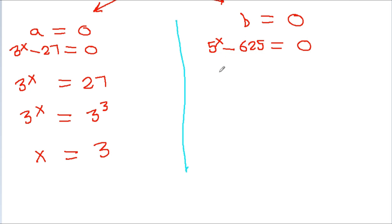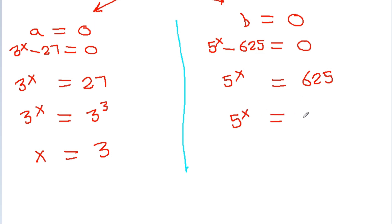And since b = 5 to the power x minus 625 = 0, we get 5 to the power x equals 625, which is 5 to the power 4, so x equals 4. Therefore there are two values of x: x equals 3 and x equals 4.